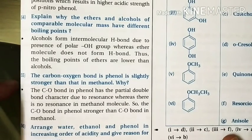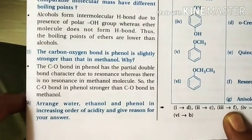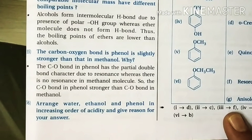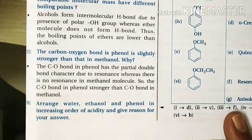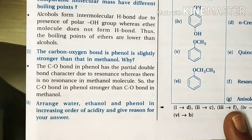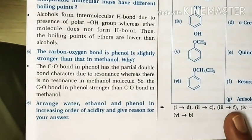Question 55: The carbon-oxygen bond in phenol is slightly stronger than that in methanol. Why? Due to the positive resonance effect of the OH group, phenol is a resonance hybrid of five structures. Out of these, structures 2, 3, and 4 contain double bond character for the CO bond. Therefore, the CO bond in phenol has some double bond character and is stronger than the CO bond in alcohol, which is a pure single bond.